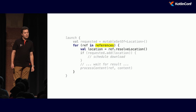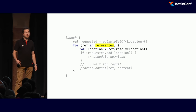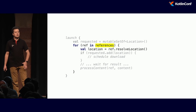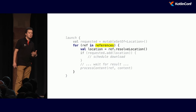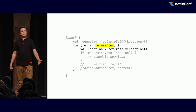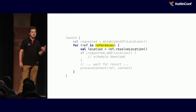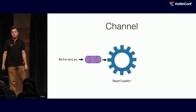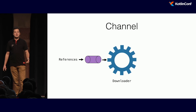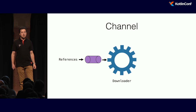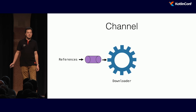But now we have a problem. We somehow have to know a list of references to work on. We wanted a long-running process that processes references. We have to somehow tell this coroutine what references to work on. With threads we'd use a synchronization primitive. When we program with coroutines, we can use a communication primitive for that — and that communication primitive is called a channel. A channel lets us transfer information from the outside world into our coroutine without worrying about sharing mutable state. A channel is like a simple pipe — you send on one side, receive on the other.